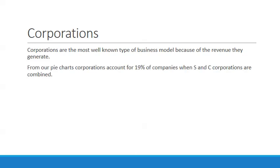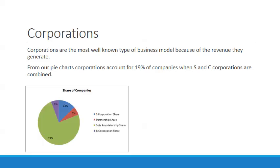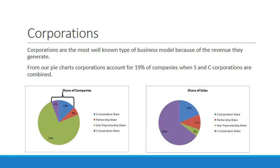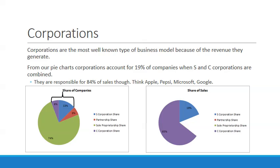From the pie charts, corporations account for 19% of companies when S and C are combined — 6% and 13% respectively. But when we look at share of sales, the overwhelming proportion of revenues generated within our economy come from these two types of corporations — they're responsible for 84% of sales. Companies like Apple, Pepsi, Microsoft, and Google are generating the high revenues within the United States economic markets.